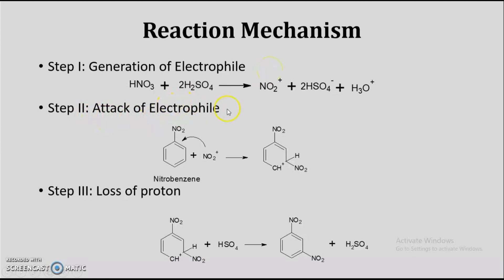The second step involves the attack of electrophile. The electrophile that is formed will attack on the nitrobenzene, and as this nitro group is a metadirector, this nitro group will attack on the meta position, which leads into the formation of the carbocation where this carbon possesses a positive charge and the hydrogen atom and nitronium ion are bonded simultaneously to this carbon atom. After that in step 3, there will be loss of proton because this carbon atom is unstable, and there is need to form a stable bond with this carbon atom.